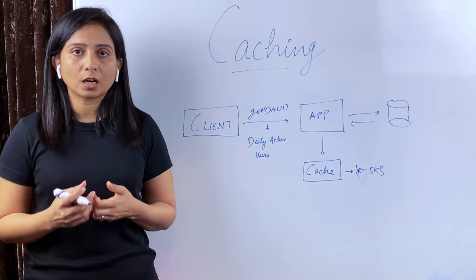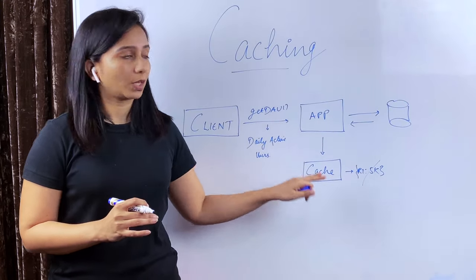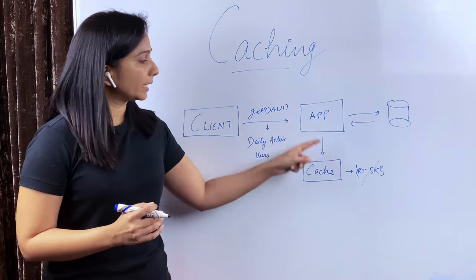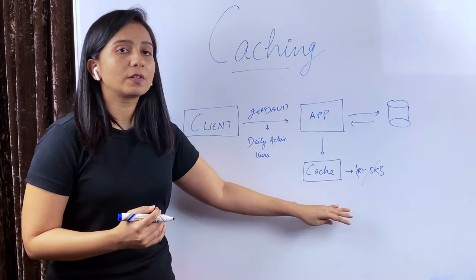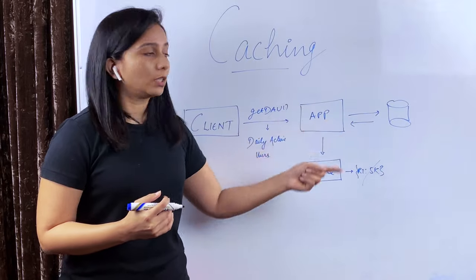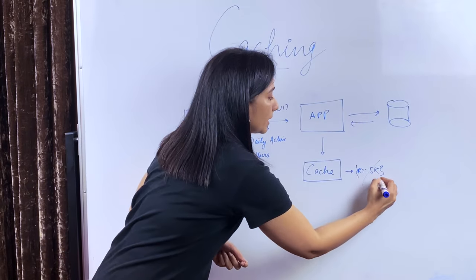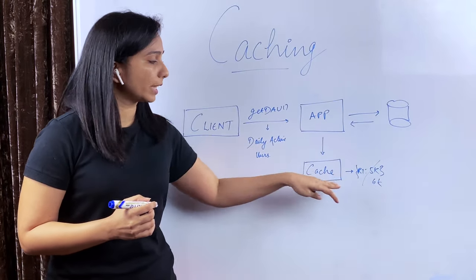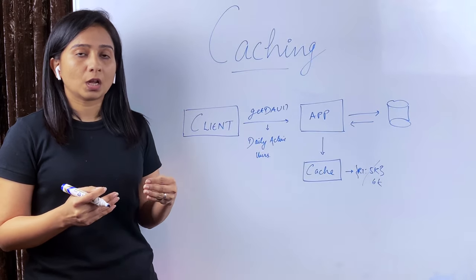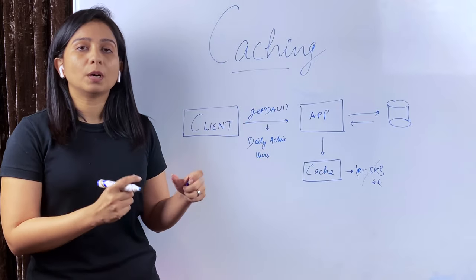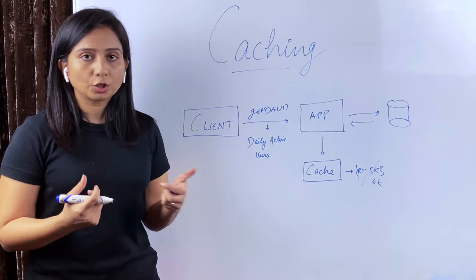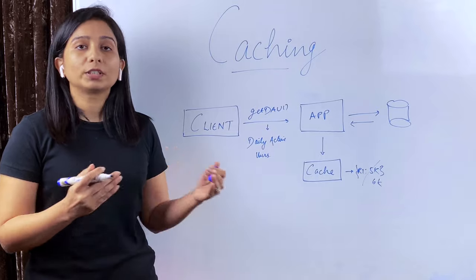There are other methods to invalidate a cache besides expiry. Suppose you have a value for request one as 5K and the number of users changes. The application can update this cache by two methods: either it removes the value from cache — in that case a cache miss will happen on the next request and the new value is fetched from DB and updated in cache — or the application code directly updates the cache value to the new value, say 6K, so the next request gets a cache hit with the fresh value. Removing or updating the value are also two ways to invalidate the older cached value.